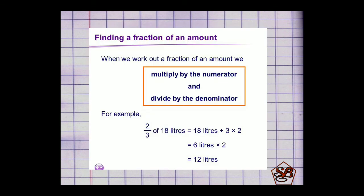Let's make it more clear with more examples. When we work out fraction of an amount we multiply by the numerator and divide by the denominator. For example, 2/3 of 18 litres. So the first step is that 18 litres is to be divided into three equal parts. So 18 divided by 3 that will give us 6 litres. Now of this we have to take two parts. So we will multiply 6 litres by 2. 6 times 2 is 12. So the final answer will be 12 litres.